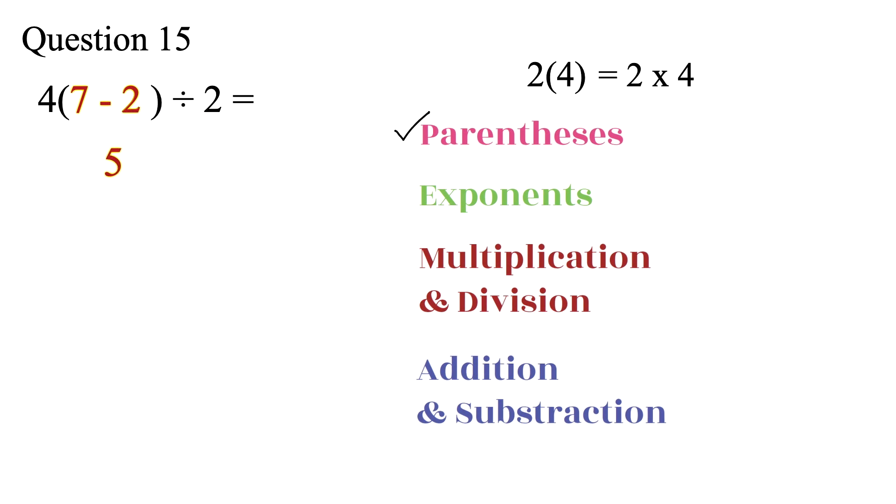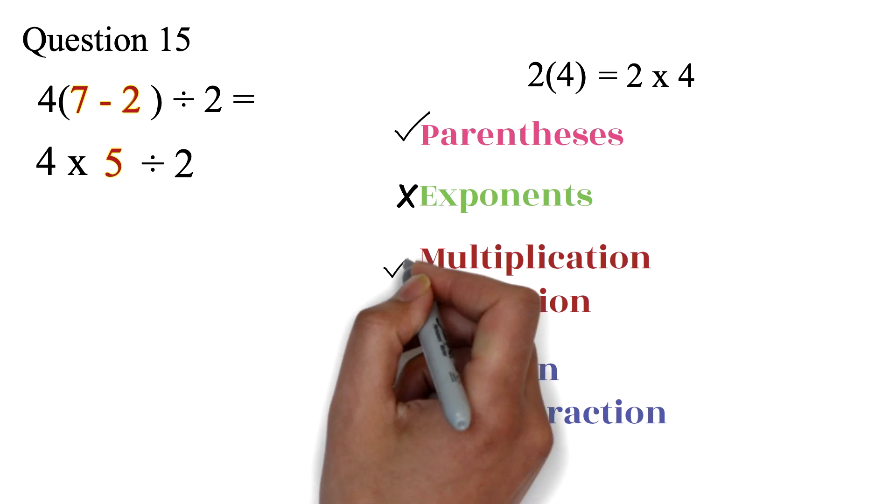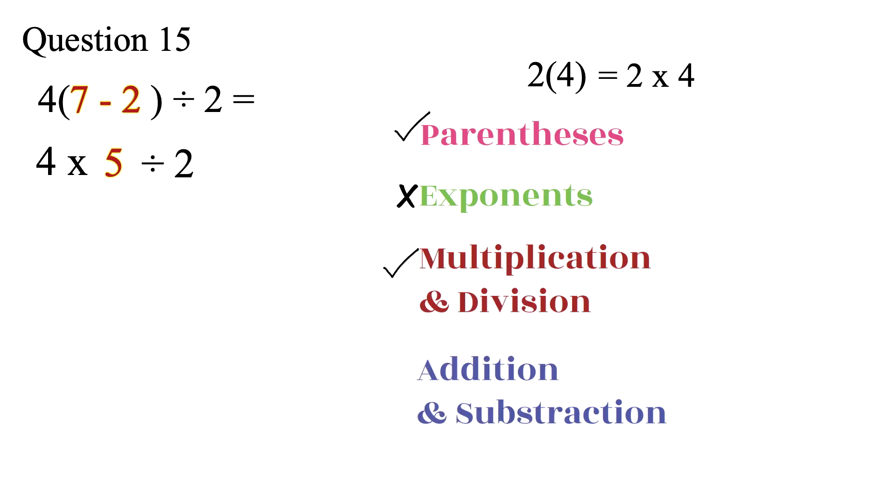Now, we have 4 times 5, divided by 2. Since there is no exponent, we can work on the multiplication and division. Remember, we have to do it from left to right.